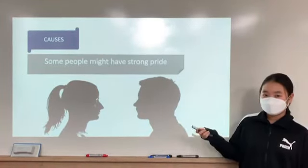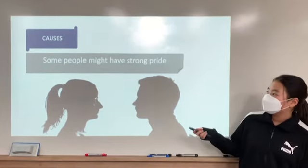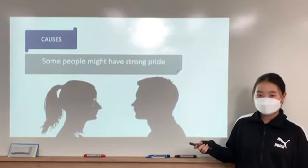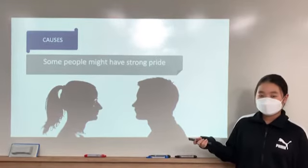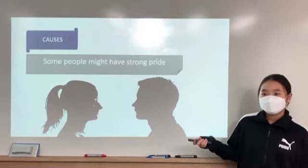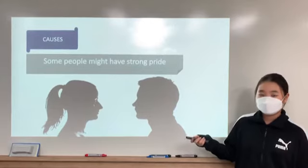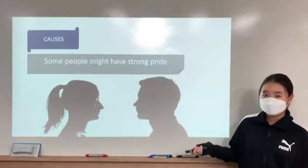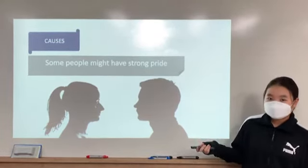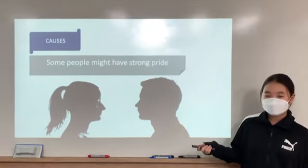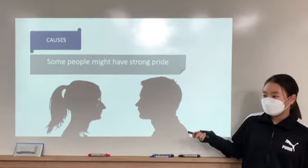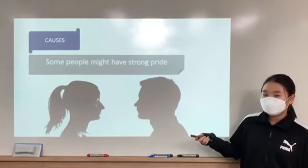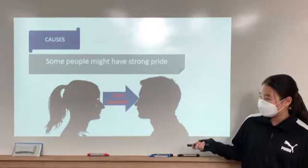Now, let's look at the causes of them. Some people might have a strong pride of their race. So they might look at others' race negatively, which makes people have prejudice against the people. So they judge others only from their point of view.